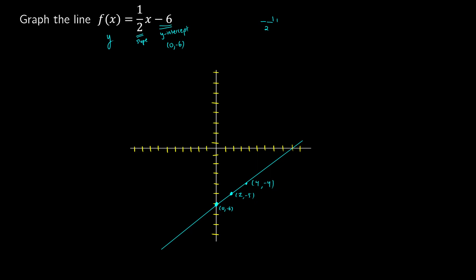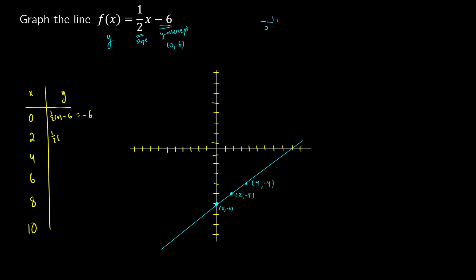Just to verify, let's check by making a little chart, using x values 0, 2, 4, 6, 8, and 10. Plugging in x equals 0 gives one half times 0 minus 6, which is negative 6 — so one point is 0, negative 6. For x equals 2, one half times 2 minus 6 gives 1 minus 6, which is negative 5 — point 2, negative 5. For x equals 4, one half times 4 is 2, minus 6 gives negative 4 — point 4, negative 4. Continuing the pattern, we see the line forming.